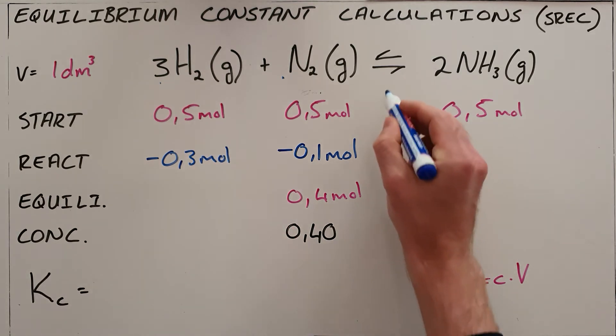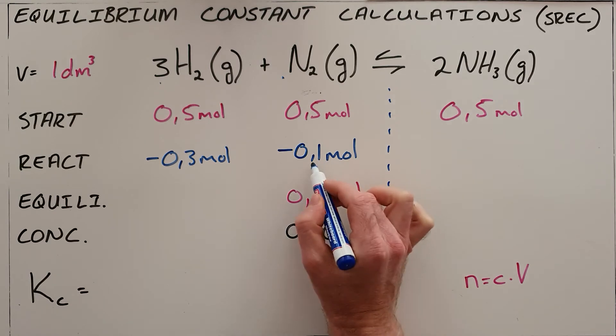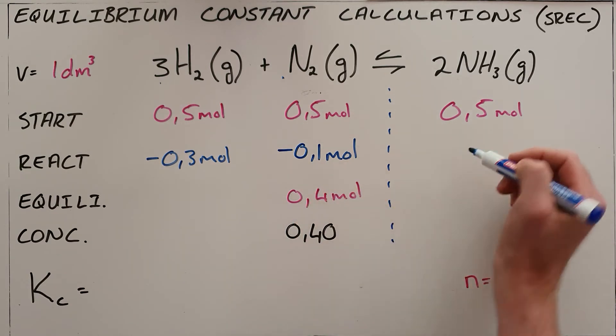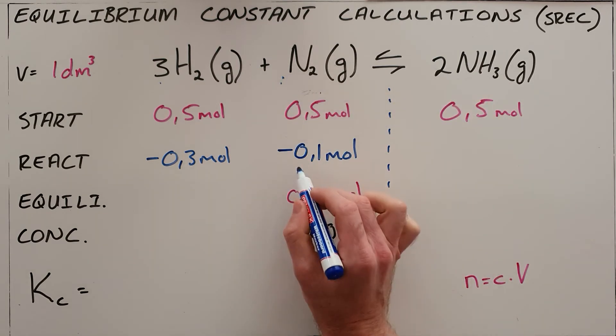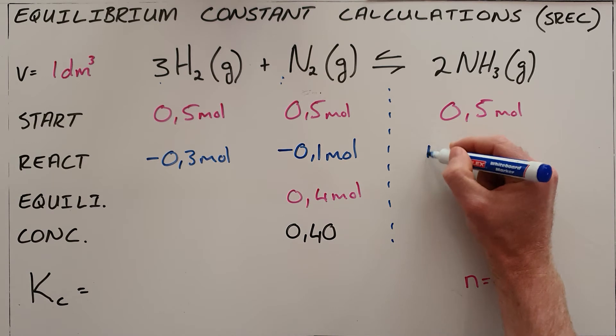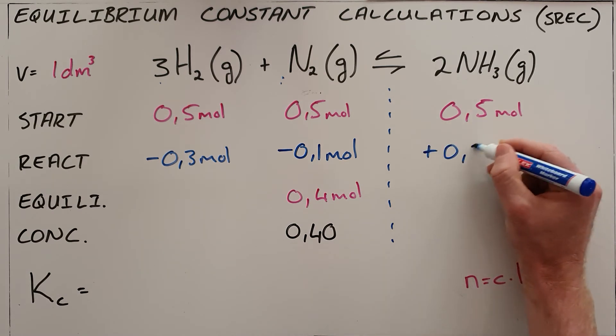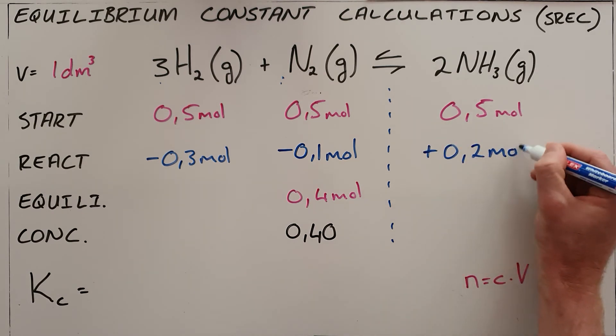And then what this also says is that when we are using up nitrogen, we will produce twice as much ammonia. As we can see, the ratio is one to two, so when we use up 0.1 moles of nitrogen, we will produce or create 0.2 moles of ammonia.